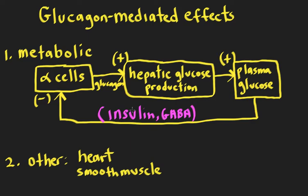Recall from the previous video that insulin is synthesized and secreted by beta cells, and there's also probably a little bit of GABA that comes out of there too. In very high concentration, that output goes directly to alpha cells next, and it's probably the release of these substances by the beta cell that is mostly going to be inhibiting glucagon output in response to a rise in plasma glucose. If we think about a lowering of plasma glucose, like a hypoglycemia, that hypoglycemia would cause suppression of beta cell output of insulin and maybe GABA, and a disinhibition of alpha cells, causing glucagon to go up, increasing hepatic glucose production, which would then raise the plasma glucose and stabilize it back towards normal.